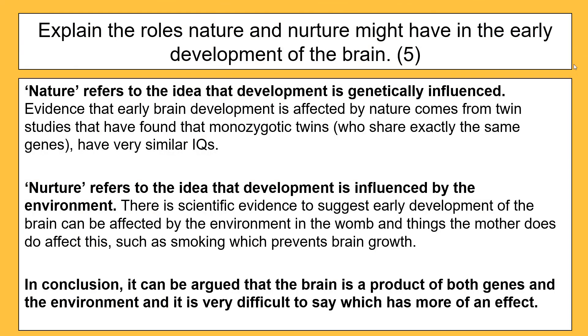And then we do the same for nurture. Definition, example. Nurture refers to the idea that development is influenced by the environment. There is scientific evidence to suggest early development of the brain can be affected by the environment in the womb. And things the mother does do affect this, such as smoking, which prevents brain growth. Then a quick conclusion to show that they're both important. In conclusion, it can be argued that the brain is a product of both genes and the environment. And it's very difficult to say which has more of an effect.